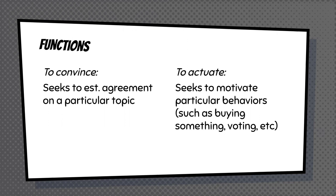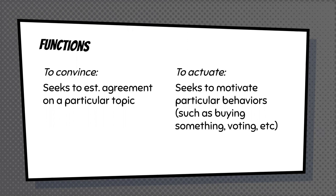We're trying to establish agreement on a particular topic, or we are seeking to motivate particular behaviors. You either want someone to agree with you, or you are specifically trying to get people to take action. For example, if you're canvassing for a political candidate and you knock on someone's door, and they already want to vote for your candidate, you're just convincing them to go out and actually vote — making sure they have transportation, know where their pen is, have their mail-in ballot ready to go.